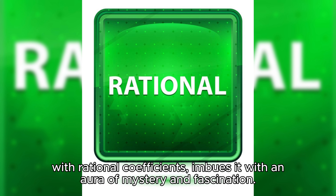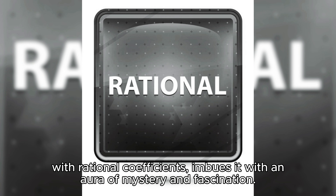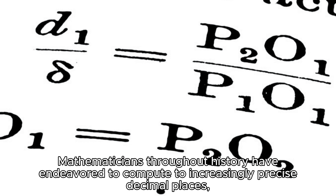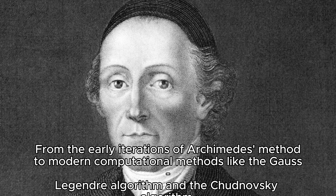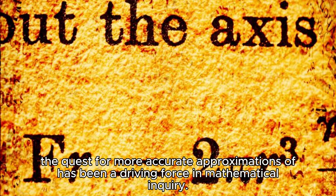Mathematicians throughout history have endeavored to compute Pi to increasingly precise decimal places, leading to the development of various algorithms and techniques. From the early iterations of Archimedes' method to modern computational methods like the Gauss-Legendre algorithm and the Chudnovsky algorithm, the quest for more accurate approximations of Pi has been a driving force in mathematical inquiry.